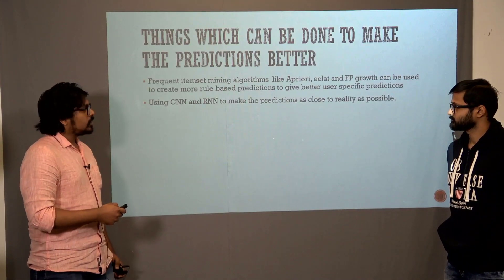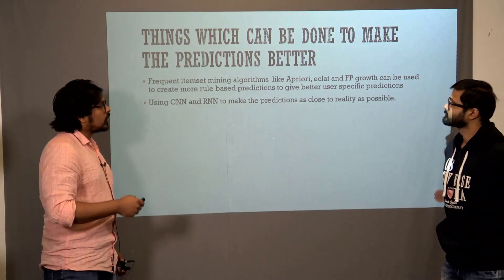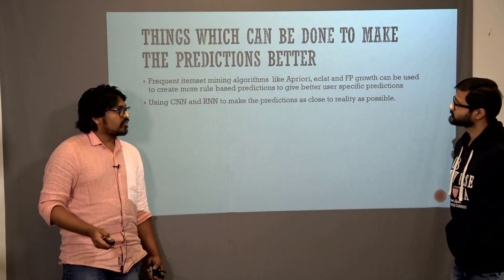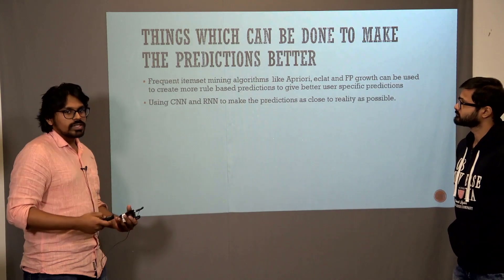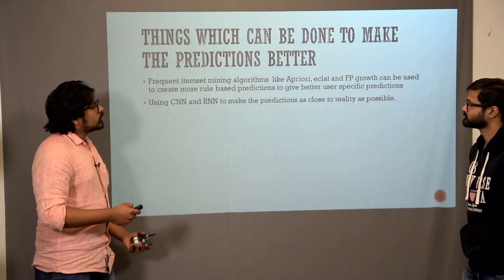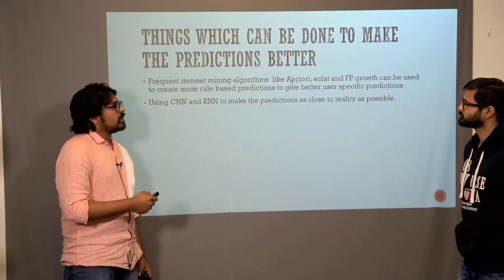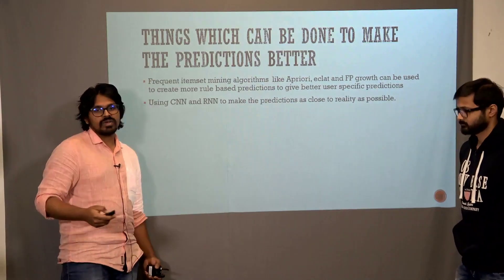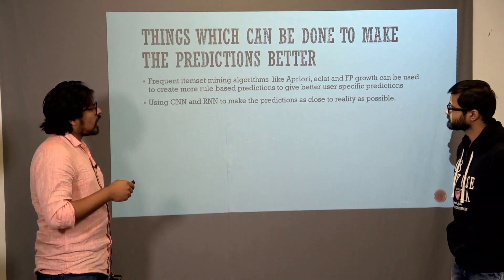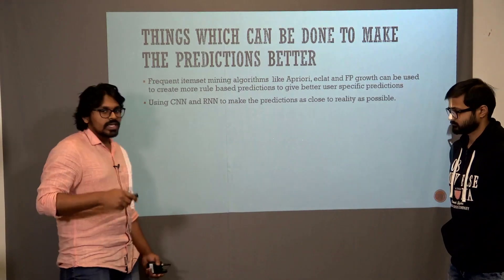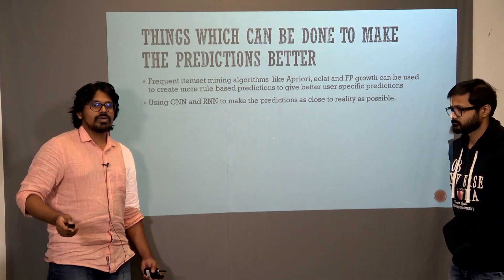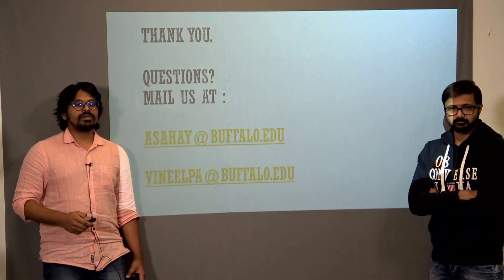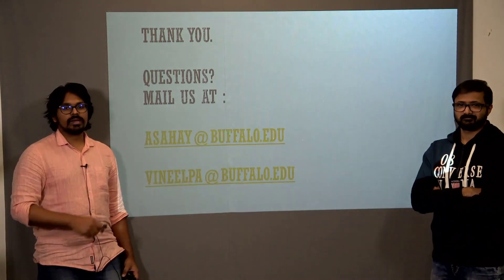As future steps, we have not yet used frequent item set mining algorithms like FP-Growth, which creates different association rules from the data. We can use these algorithms to give user-specific predictions rather than cohort-specific predictions. We can also use CNN and RNN deep learning models to get predictions even closer to reality. Thank you — if you have any questions, you can mail us at our email IDs.